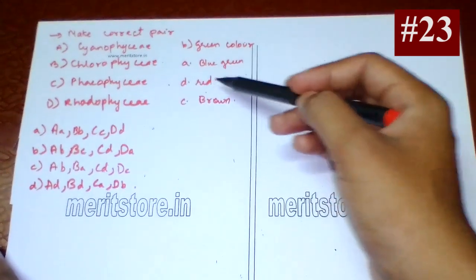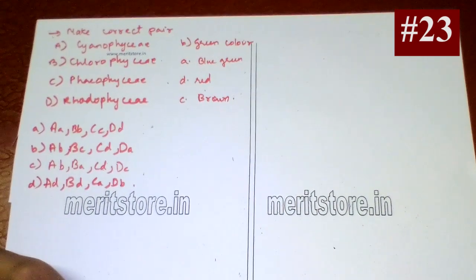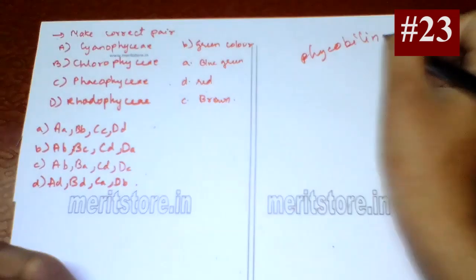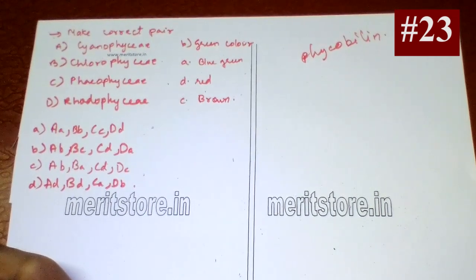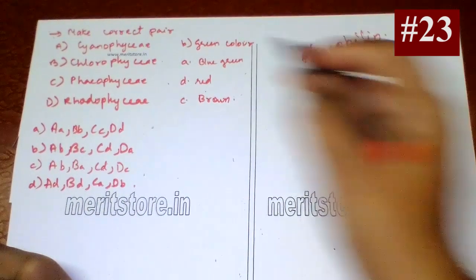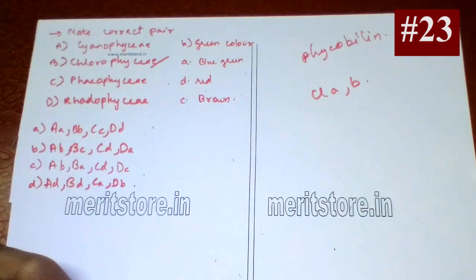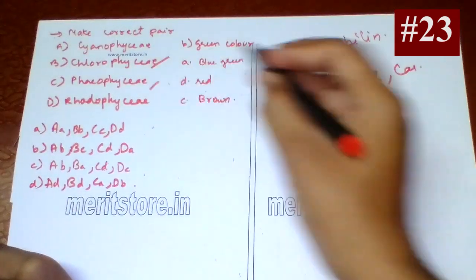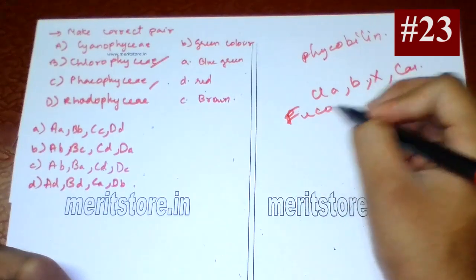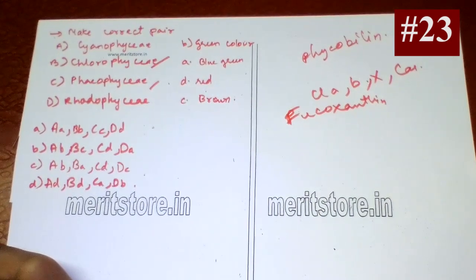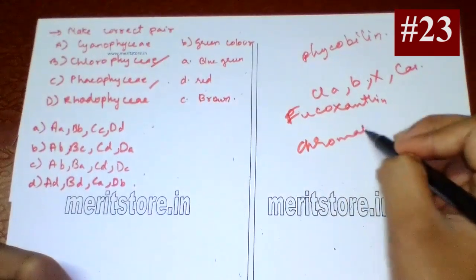Matching algae with their colors: Cyanophyceae is blue-green due to the pigment phycobilin (phycocyanin). Chlorophyceae is green due to chlorophyll a, b, xanthophylls, and carotene. Phaeophyceae is brown in color due to fucoxanthin. Rhodophyceae is red due to the red pigment phycoerythrin in the chromatophores. The correct option is option C.